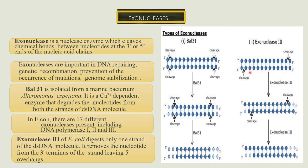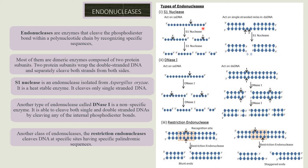Endonucleases are enzymes that cleave phosphodiester bonds within a nucleotide chain by recognizing specific sequences. Most of them are dimeric enzymes composed of two protein subunits. The two protein subunits wrap the double-stranded DNA and separately cleave both strands from both sides.